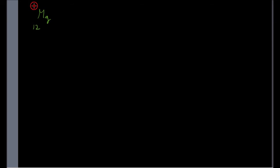You often find elements with atomic weights which are not whole numbers. For example, in the periodic table magnesium is represented as Mg-12-24.3 and calcium as Ca-20-40.48. Just now we saw that number of neutrons equals atomic mass minus atomic number. So can we say magnesium has 12.3 neutrons? That is not possible. To explain these fractional atomic masses, I have to introduce the concept of isotopes.